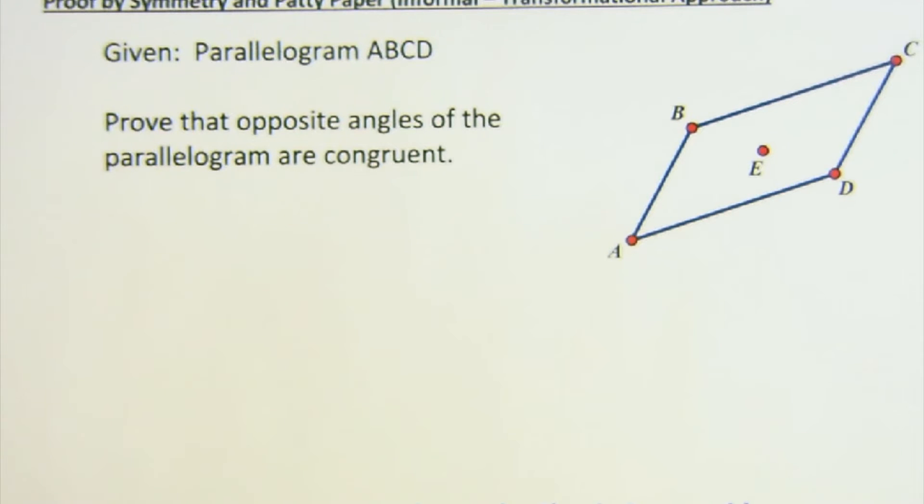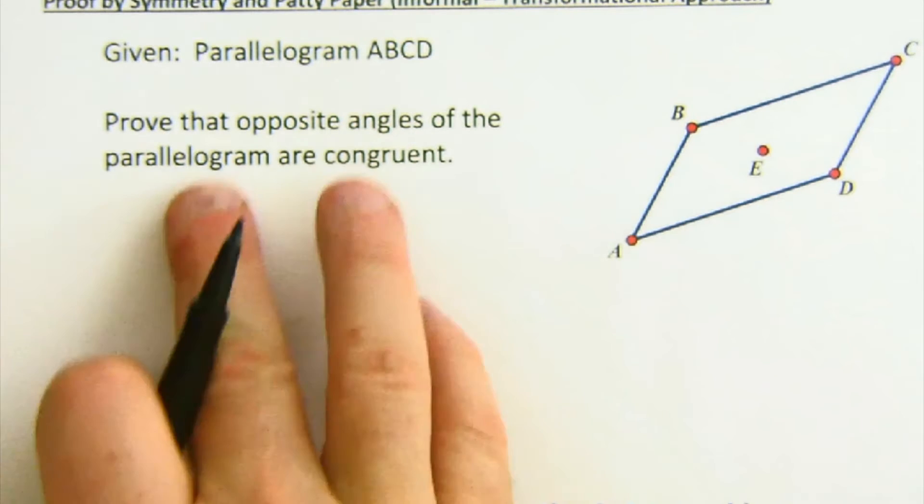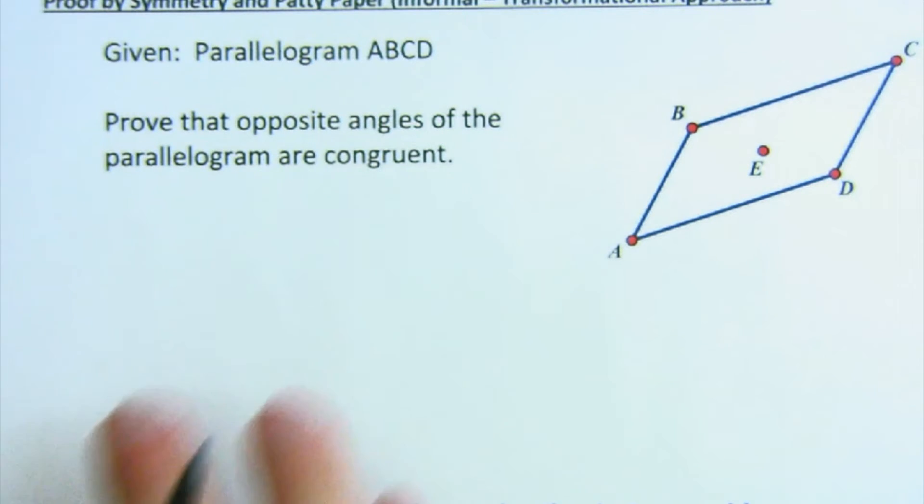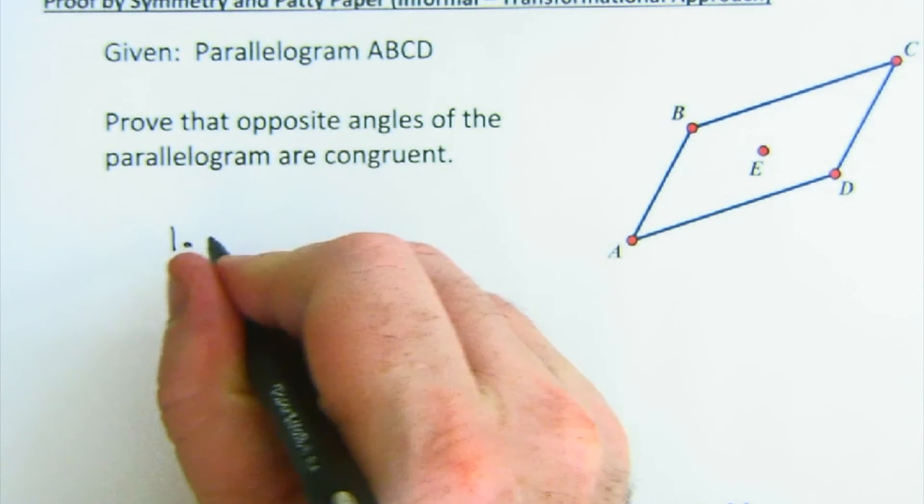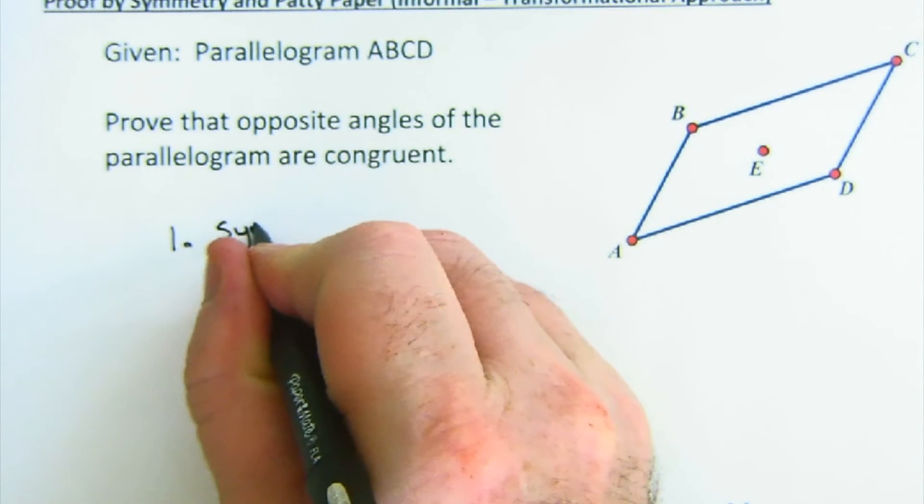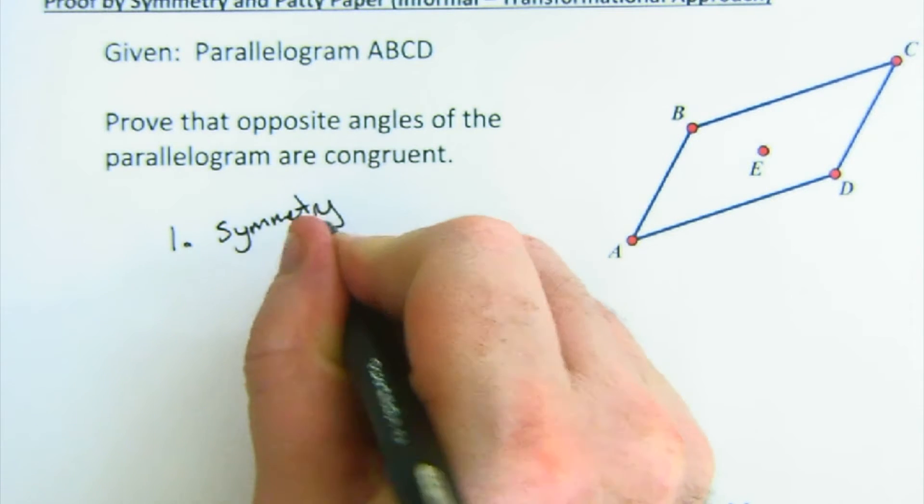Good luck with it. Just to show you a specific example like the one I just did on the board, here's another one that says, given a parallelogram, so I know it's a parallelogram, prove that opposite angles are congruent.